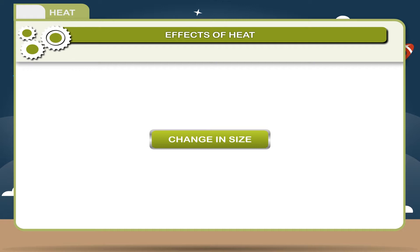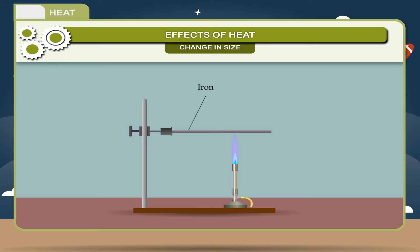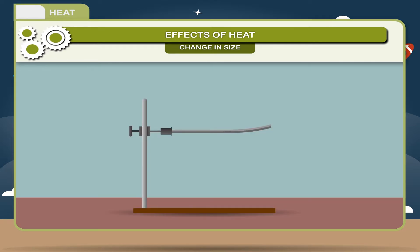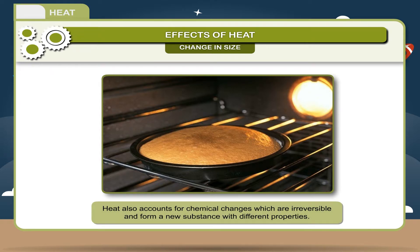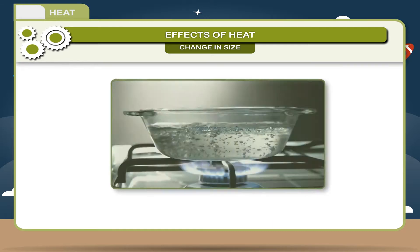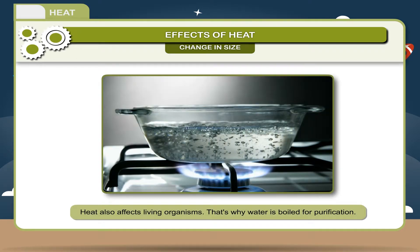Change in Size: When a body is heated, an expansion occurs in it. Due to this, the size of the body may change. The expansion of a body due to heating is called Thermal Expansion. When a material is cooled, it contracts. Heat also accounts for chemical changes which are irreversible and form a new substance with different properties. For example, baking of a cake. Heat also affects living organisms; that's why water is boiled for purification.